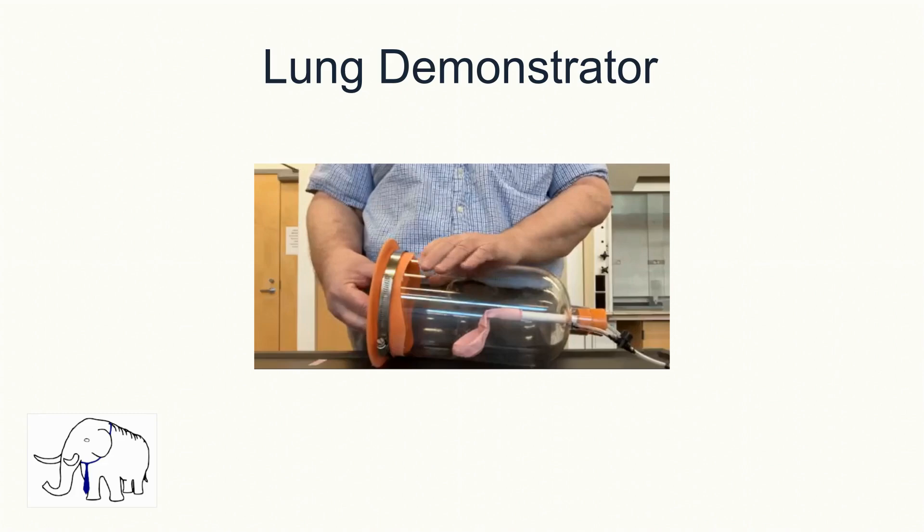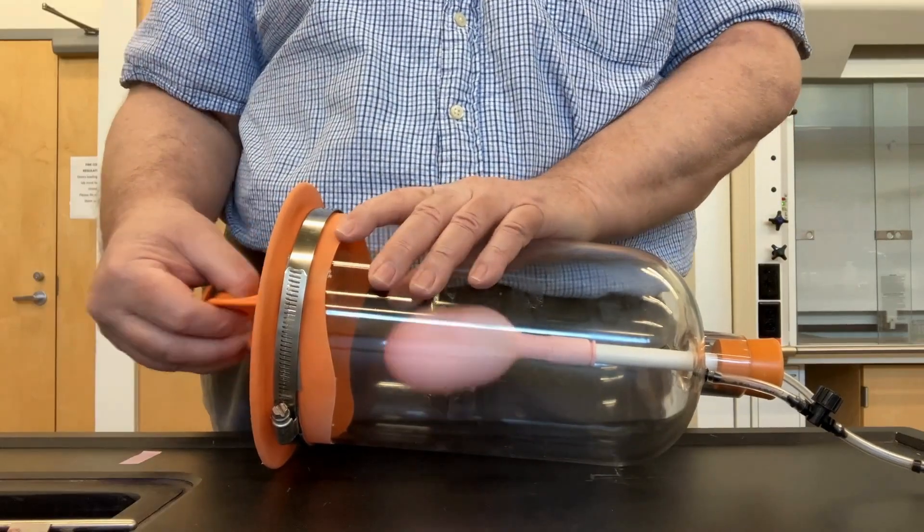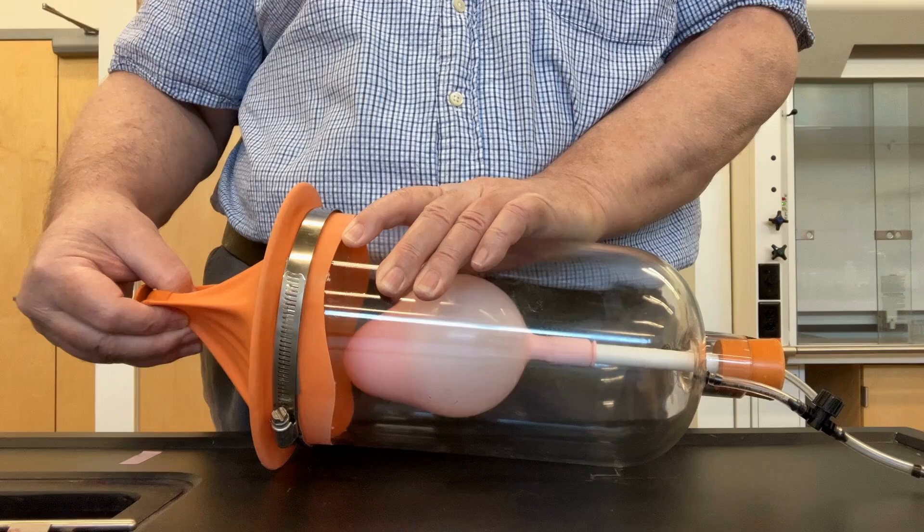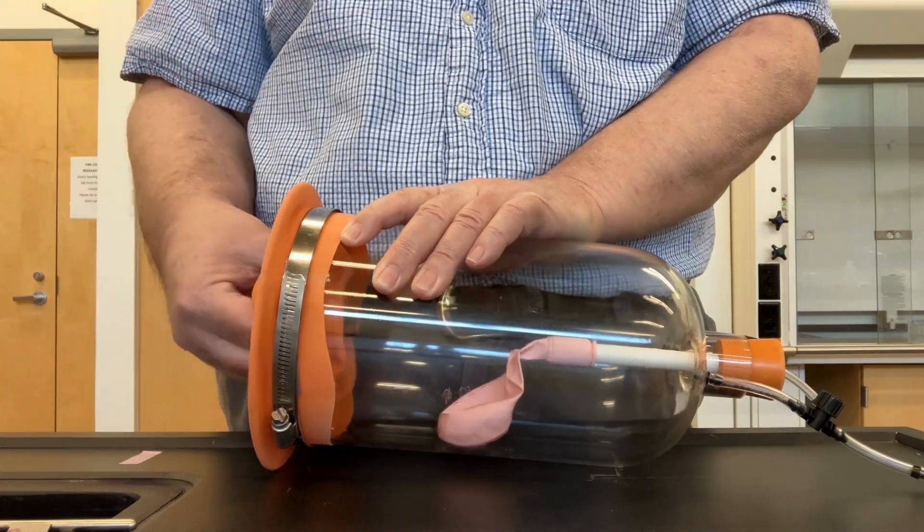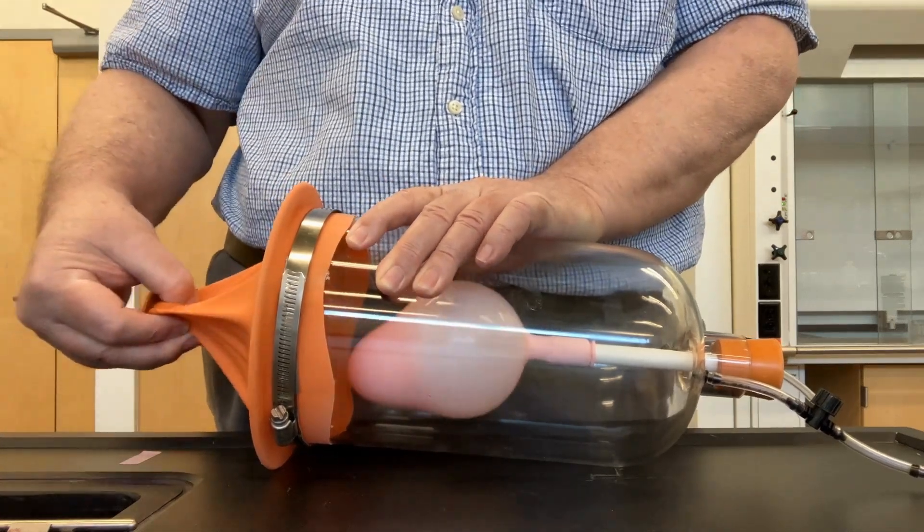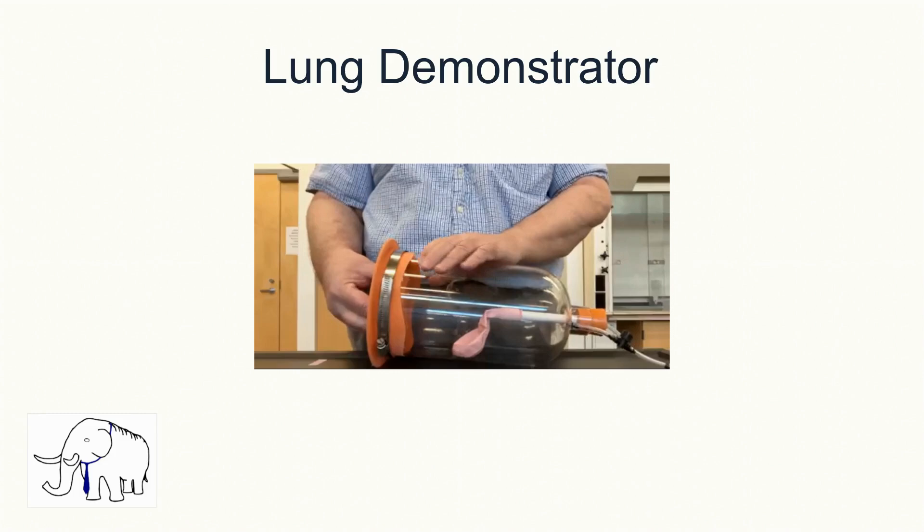The clear plastic jar represents the thoracic wall, and the rubber sheet at the bottom represents the diaphragm. Pull down on the diaphragm, the volume of the thoracic cavity increases a little bit, and the lung expands a little bit. The whole thing is lying on its side, so superior is that direction, and inferior is that direction.